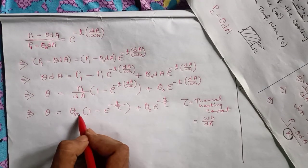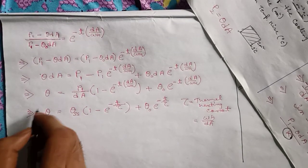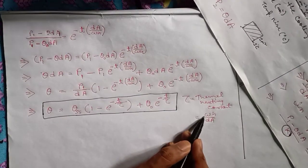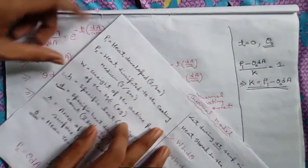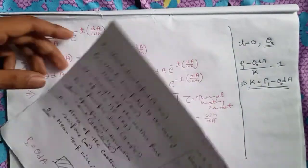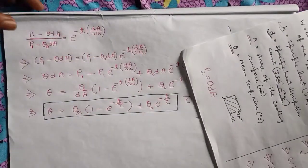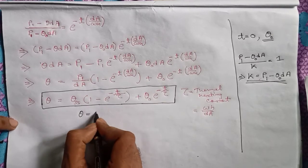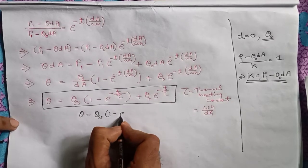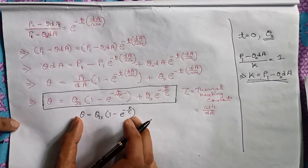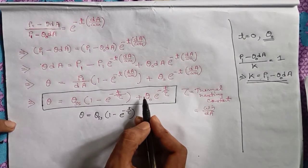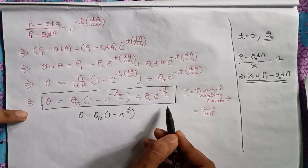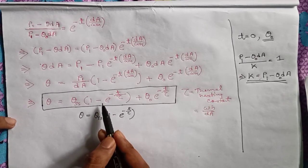If the initial temperature rise of the machine is zero, that is if θ₀ = 0, then we can also write θ = θ_ss·(1 − e^(−t/τ)). Generally this is the case, but in some questions they may also give the initial temperature rise, so you have to remember the full formula. We will solve a problem related to this formula in my next video. For cooling also we will get an exactly similar expression, only τ will be replaced by τ', the thermal cooling constant, which will be WH/D'A — where D' is the dissipation constant during cooling.